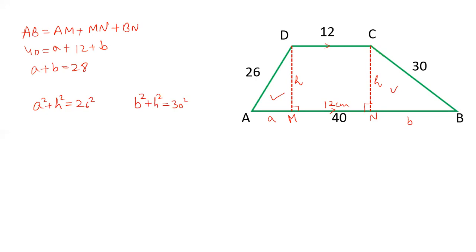So after this we can compare the two equations. So let's subtract the two equations and we can get the value of A and B. Let's solve this equation. B square plus H square is 30 square, A square plus H square is 26 square. Subtract the two, this cancel out.